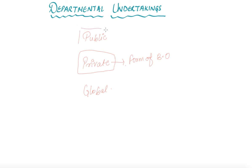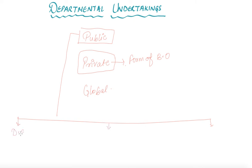Now it's time to learn regarding public sector enterprises. We have already discussed that this public sector is further divided into three forms of organization: the first one is departmental undertaking, the second one is statutory corporation, and the third one is government company. So now it is time to learn regarding the first form of organization of the public sector — departmental undertakings.